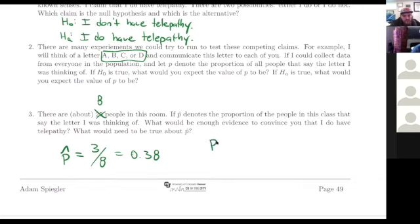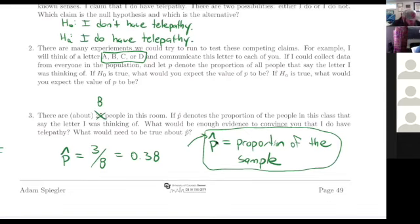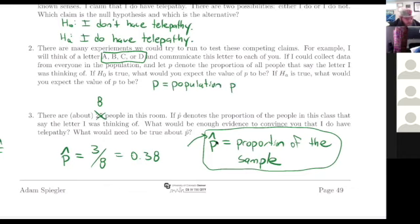This refers to a sample proportion — that's a theme in statistics. We put hats on top of things when they are based on samples. So we'd write P-hat, the empirical cumulative distribution function had an F with a hat on top — it's the same idea. Whereas P without a hat we use for a population proportion.